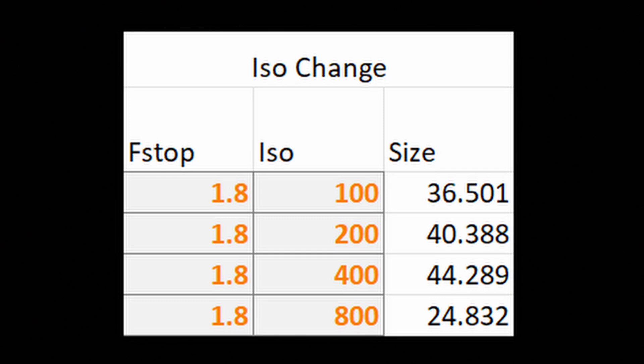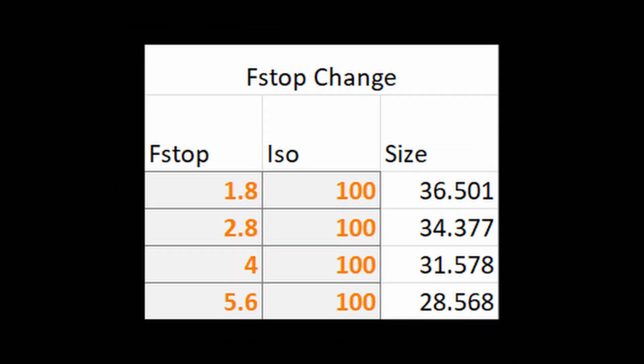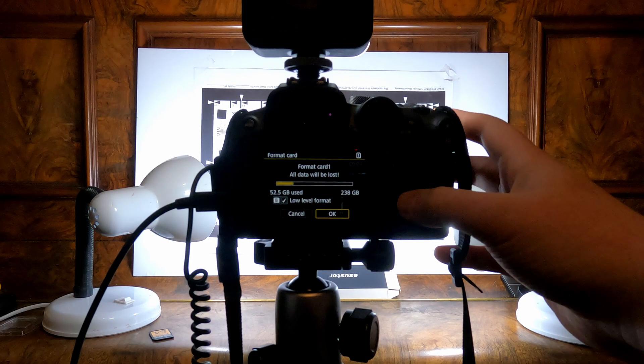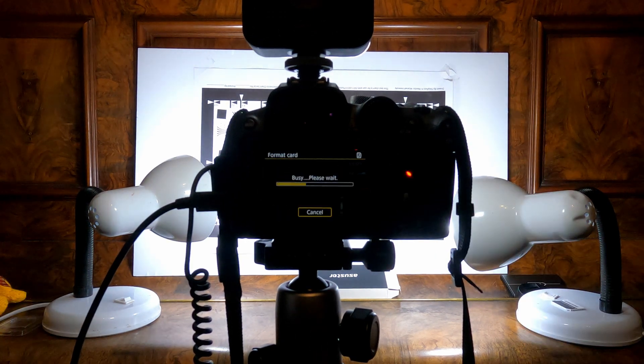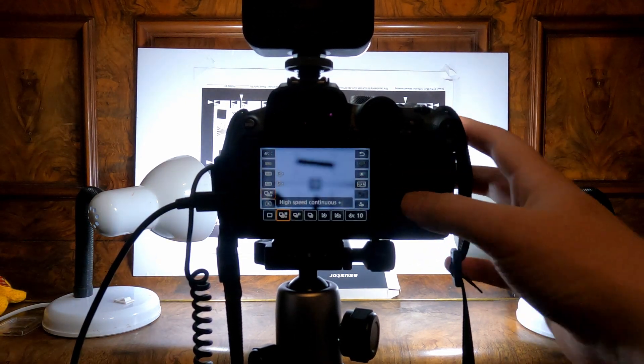Moving on to the third graph, we have the f-stop change. You'll notice that as the f-stop increases — with ISO and aperture staying the same — the file size is decreasing. We are just losing detail; it's as simple as that. I also mentioned in my last garage update video that I was working on the roof — here's a quick clip of me actually working on the roof.